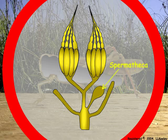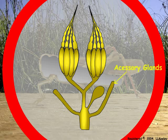Sperm are released from the spermatheca to fertilize the egg as it passes through the common oviduct for oviposition. Accessory gland secretions assist egg-laying; these products may be venoms, as in the case of wasps, or cement to fix the egg to the oviposition site.